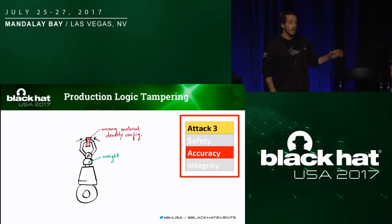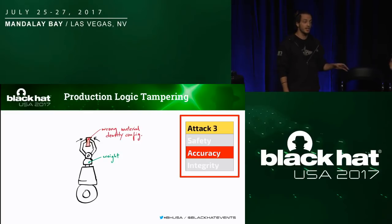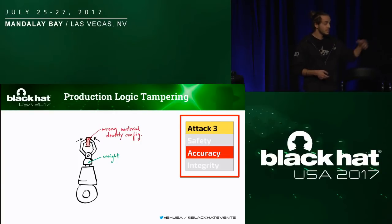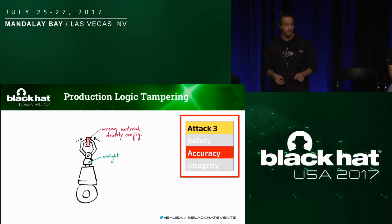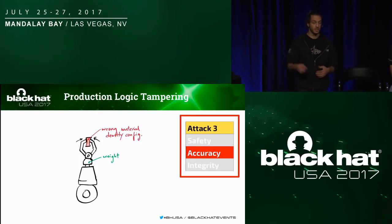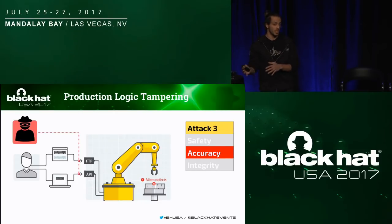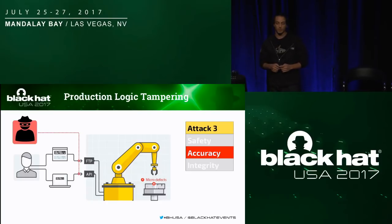The third attack is production logic tampering. Here, the attacker compromises the safety requirement by modifying the code running on the controller. In this image, we specified a wrong density — specifying the weight of an object in the code. If the attacker changes this representation, the robotic arm starts drifting upwards. If the attacker can modify the code — because no code integrity checks are present, for example via a man-in-the-middle attack — he can basically do whatever he wants: modify the production process completely or introduce micro defects.